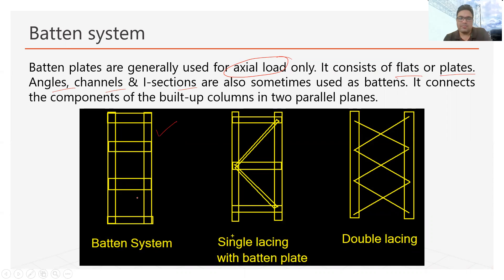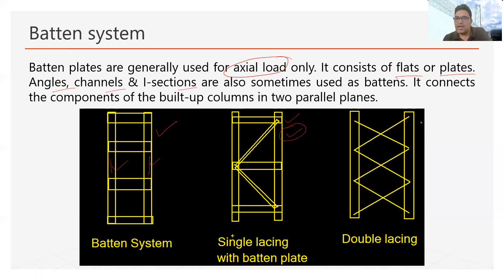In the diagram we can see the baton system, in which these vertical components are the main components that will carry the axial load. To make these two components act as a single unit, we connect them using baton system or lacing system. In the second diagram, you can see a combination of lacing system and baton system, which is found to be more efficient and is used in most cases. Another system is the double lacing system. Although in the previous lecture we designed single lacing system, double lacing system can also be designed using the same general requirements and design considerations discussed in the previous lecture.